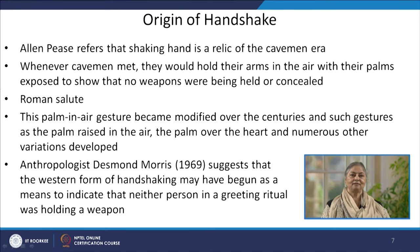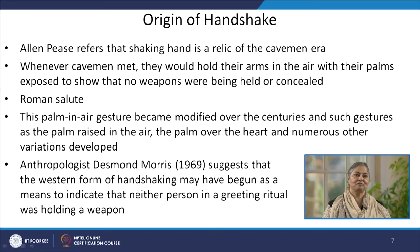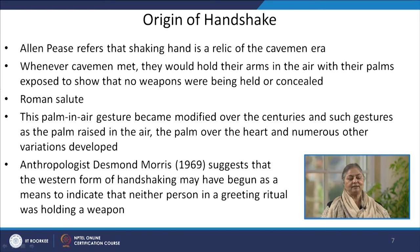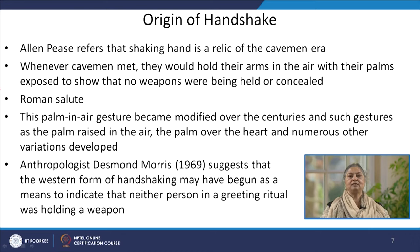It is interesting to note that the origin of handshake is related with the survival instincts of human beings. Alan Pease has referred to this idea that shaking hands is basically a relic of the caveman era. He suggested that during the early phases of civilization, people used to hold their arms in the air with open palms to suggest they were not carrying any weapon to harm others. Gradually, with the passage of civilization, it was reduced to a Roman salute where the hand was carried towards the heart. This palm-in-the-air gesture was modified over centuries. This idea is supported by Desmond Morris, who suggested in his 1969 work that the western form of handshaking might have started as a means to indicate that neither person involved in this greeting ritual is holding a weapon.